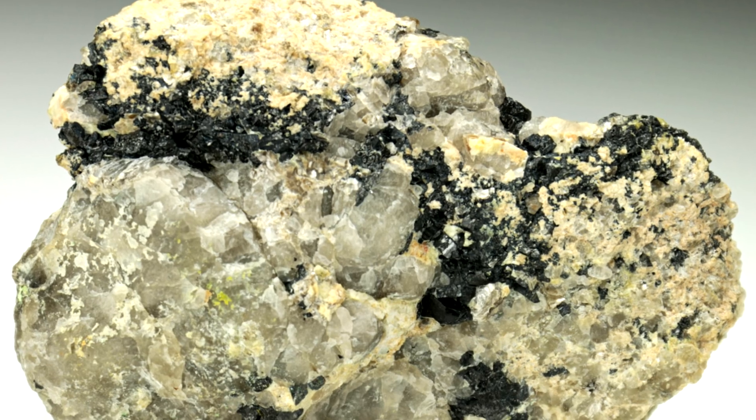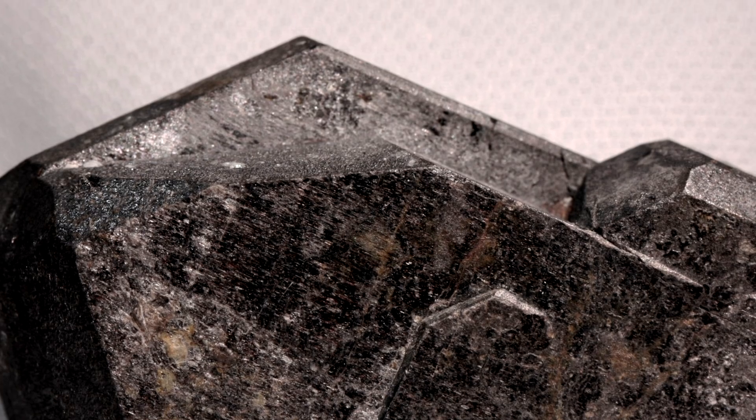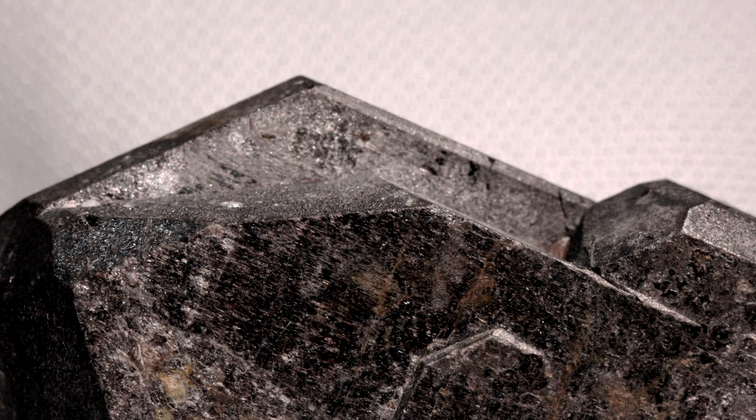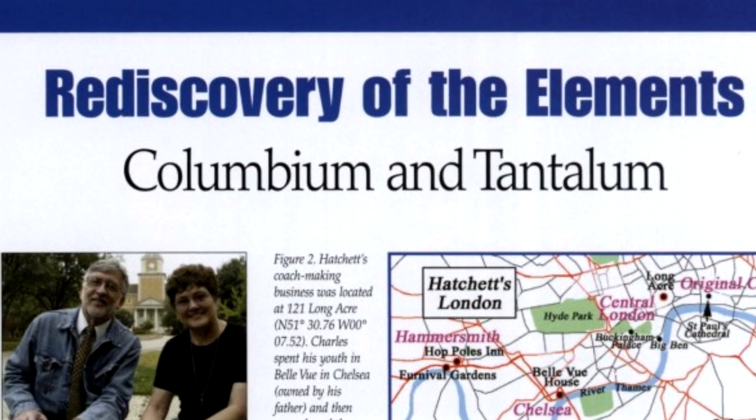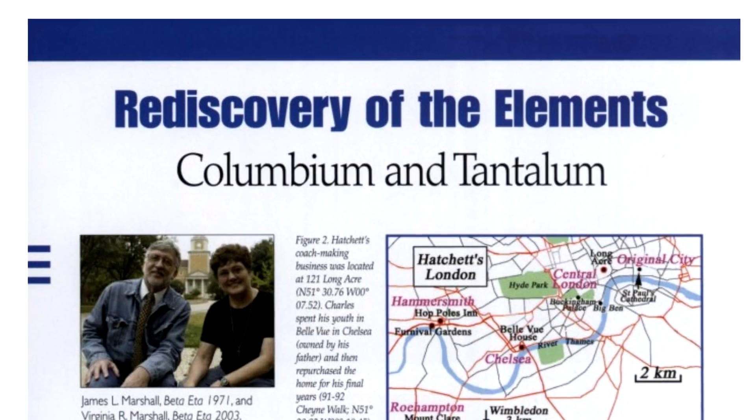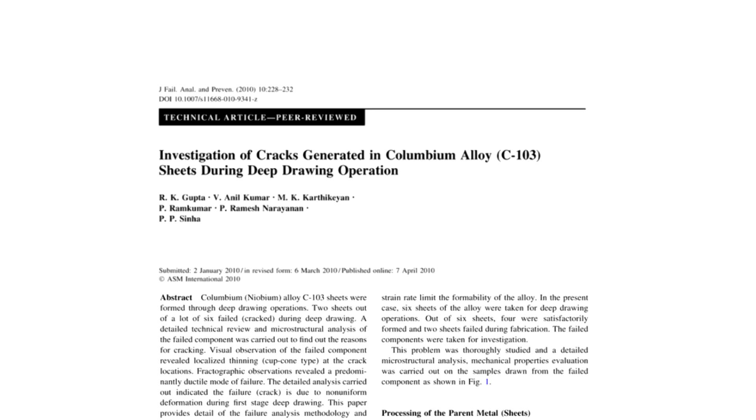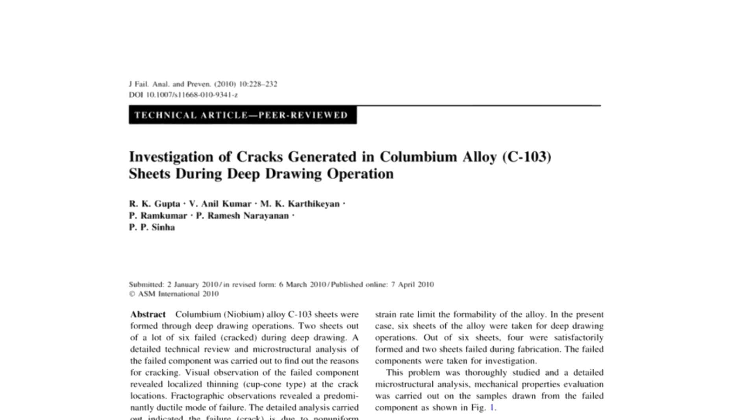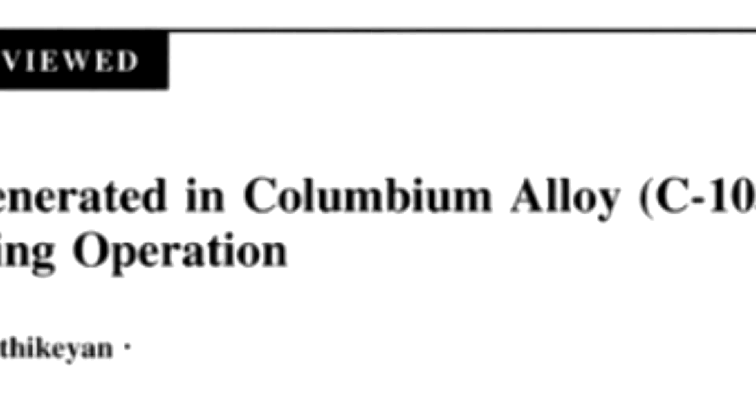Niobium is mined from the mineral columbite, where tantalum is also present. Because of that, until 1949 in the US, niobium was also called columbium. As in the 19th century, American scientists sometimes considered tantalum and niobium the same element.